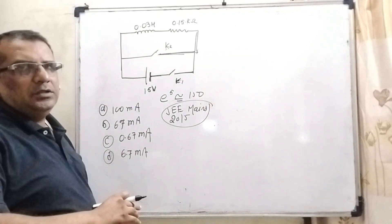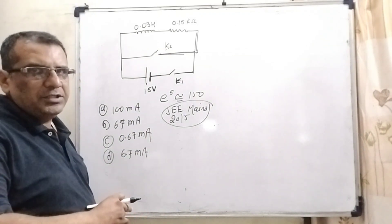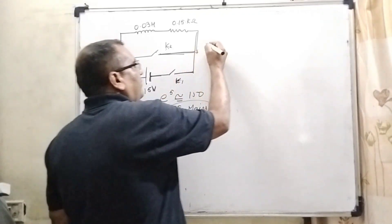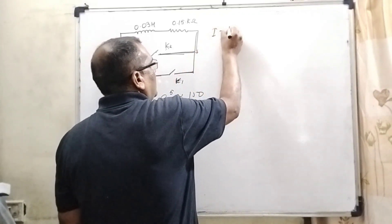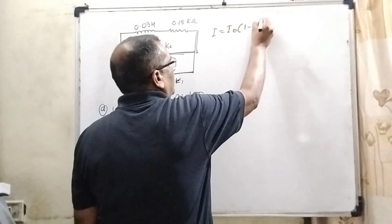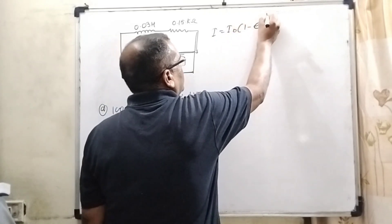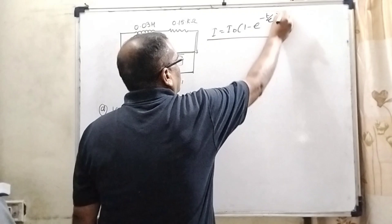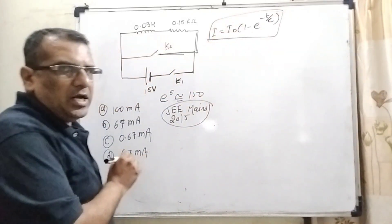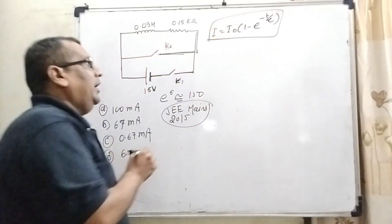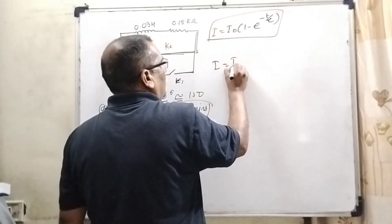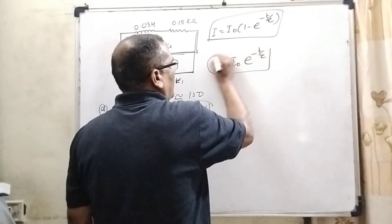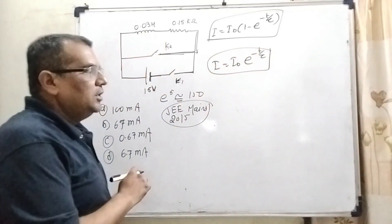So here we use the formula for discharging. The formula for charging is I equal to I₀ times (1 minus e raised to power minus T by tau), where tau is the time constant. And the formula for discharging is I equal to I₀ times e raised to power minus T by tau.